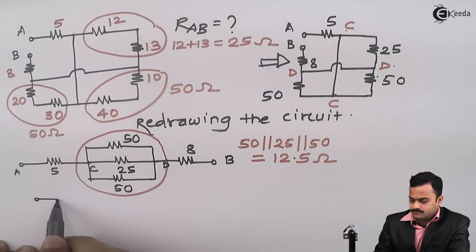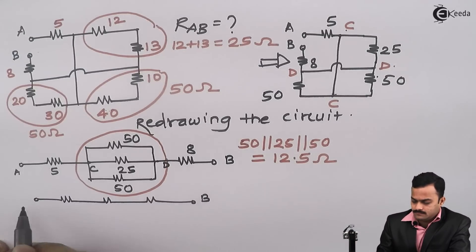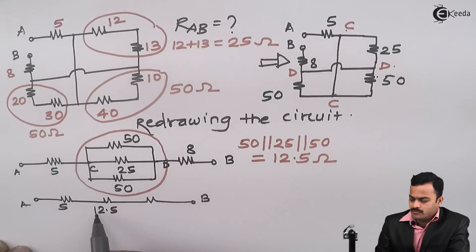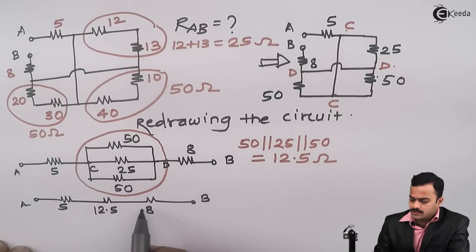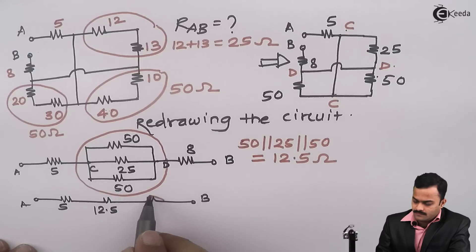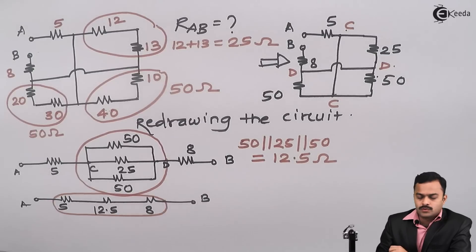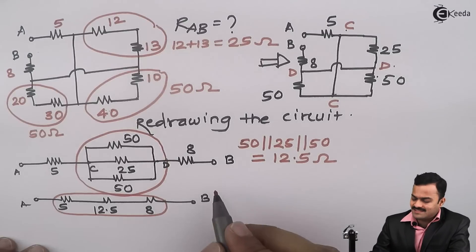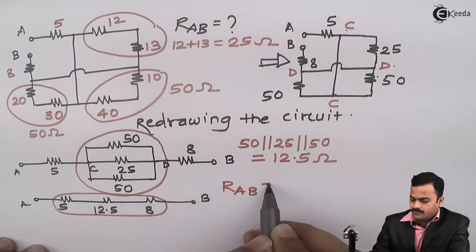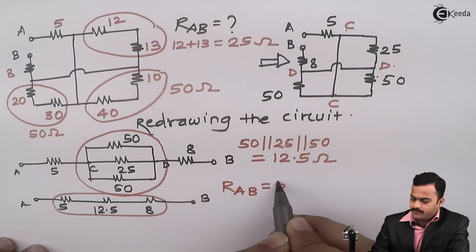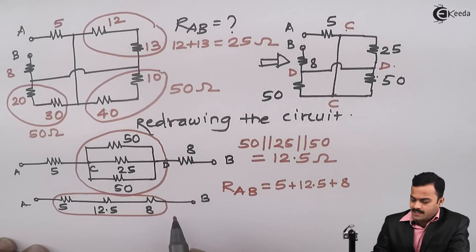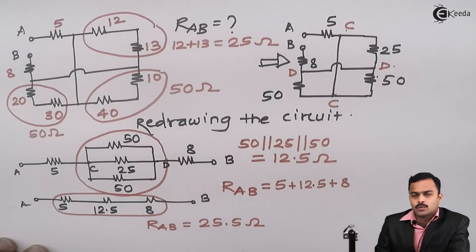So out of these three resistors I will get only one resistor which is 12.5 ohm. So after redrawing the circuit I will get 5 ohm as it is, these three resistors reduced into one which will become 12.5 ohm, and this 8 ohm is untouched. And I could very well say 5, 12.5 and 8 ohm are in series. So equivalent resistor RAB for me here will be 5 plus 12.5 plus 8. And finally I will get RAB is nothing but 25.5 ohm.